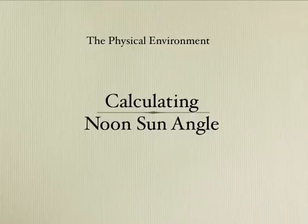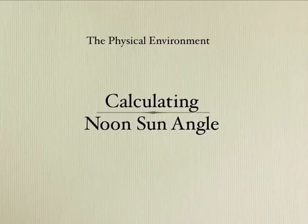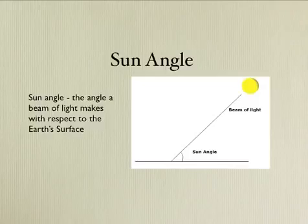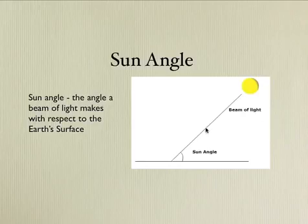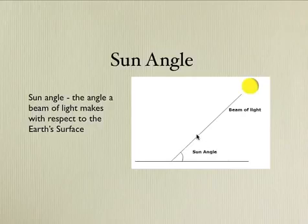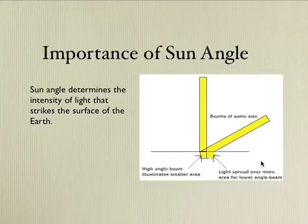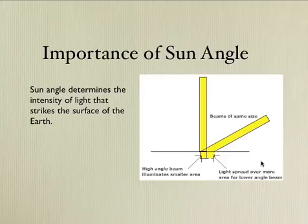In this podcast, we'll learn how to calculate the noon-sun angle. The sun angle is the angle that a beam of light makes with respect to the Earth's surface. Think of the sun angle as how high the sun is above your horizon. Sun angle determines the intensity of light that strikes the surface of the Earth.